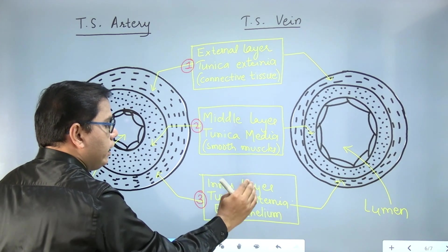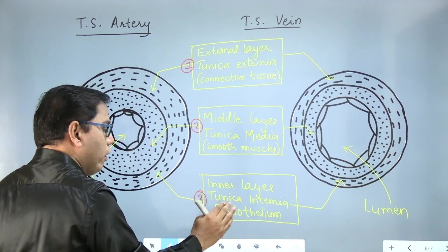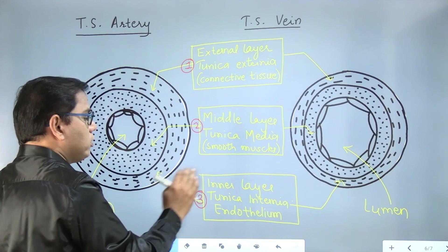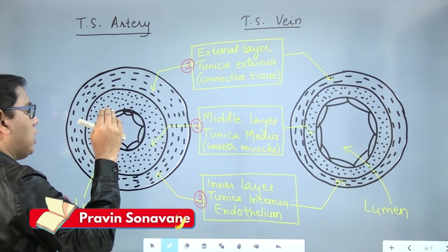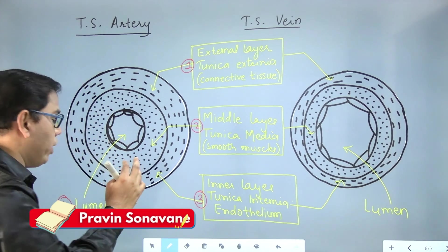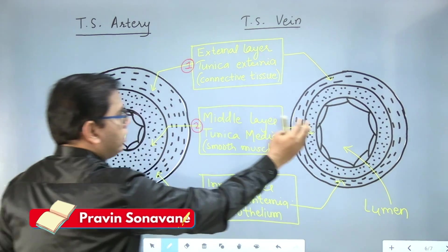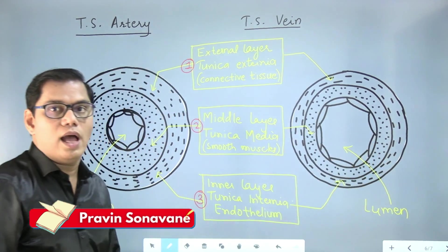Also known as tunica interna, and also known as endothelium. And the region inside the innermost layer through which blood is going to flow, that region, that empty region, is called the lumen.